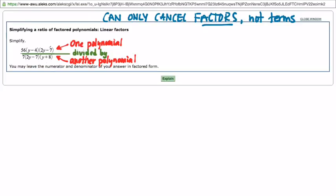In this particular problem, the rational expression that was given to us was given to us in a form which is already factored. 56 times y minus 4 times 2y minus 7, that's our numerator. 7 times 2y minus 7 times y plus 8, that's our denominator. So all the factoring has already been done for us here.